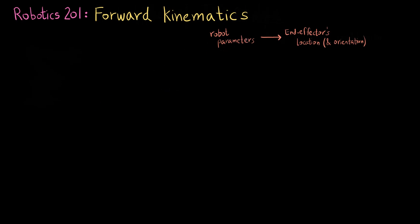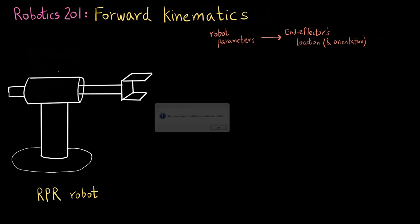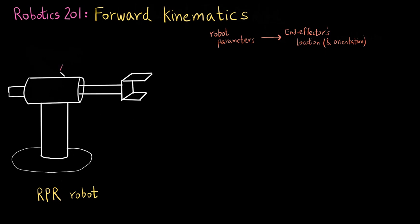Let me explain this with the help of an example. Here I have an RPR robot. So there is a revolute joint, there is a prismatic joint, and there is a revolute joint here as well. So it is called an RPR robot.